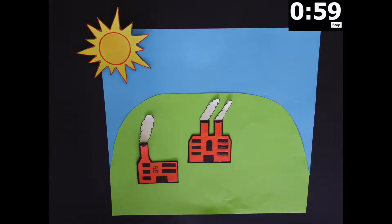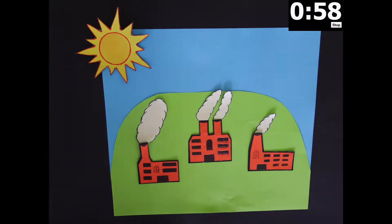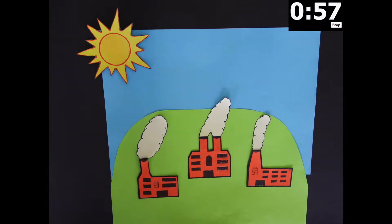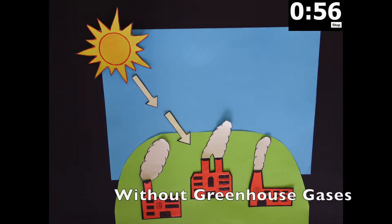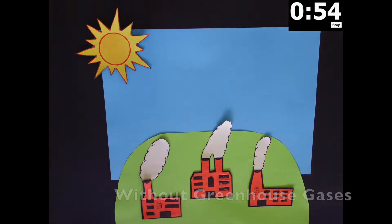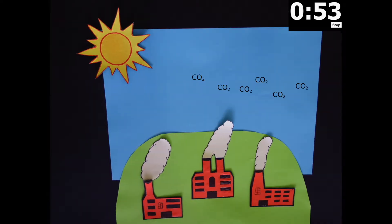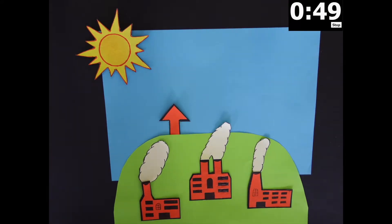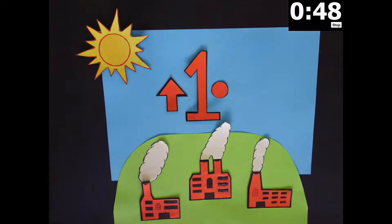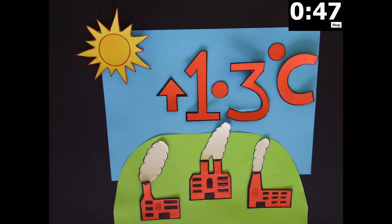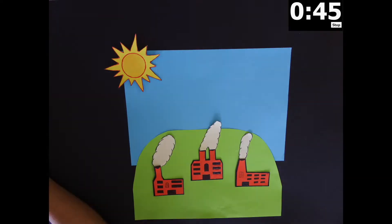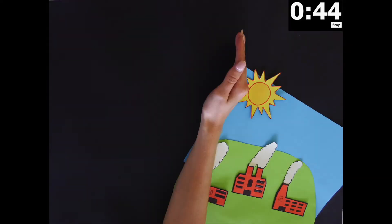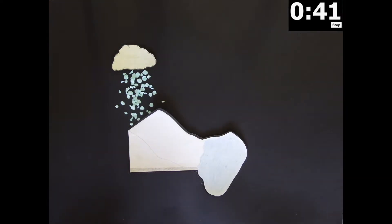Human activities over the past 200 years have rapidly increased the levels of heat-trapping gases such as carbon dioxide in the atmosphere. Such activities have caused the global temperature of the Earth to warm by around 1.3 degrees C, with implications for glaciers worldwide. As temperatures rise, glacial mass balance is altered.